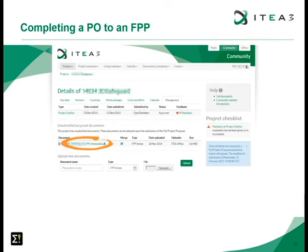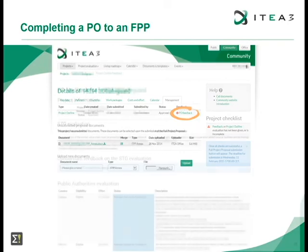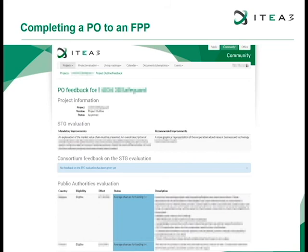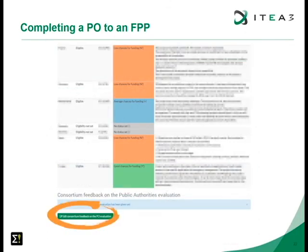There is also a new block called 'PO Feedback' where you are asked to give your response to the reviewers' feedback. Opening this page shows two blocks: the first is the steering group evaluation split into mandatory and recommended improvements, which you should address and reflect in the written document. The second part is the public authority evaluation, where every country has given its evaluation and comment; these comments must be reflected in the FPP and you can write your feedback using the edit button at the bottom of the page.